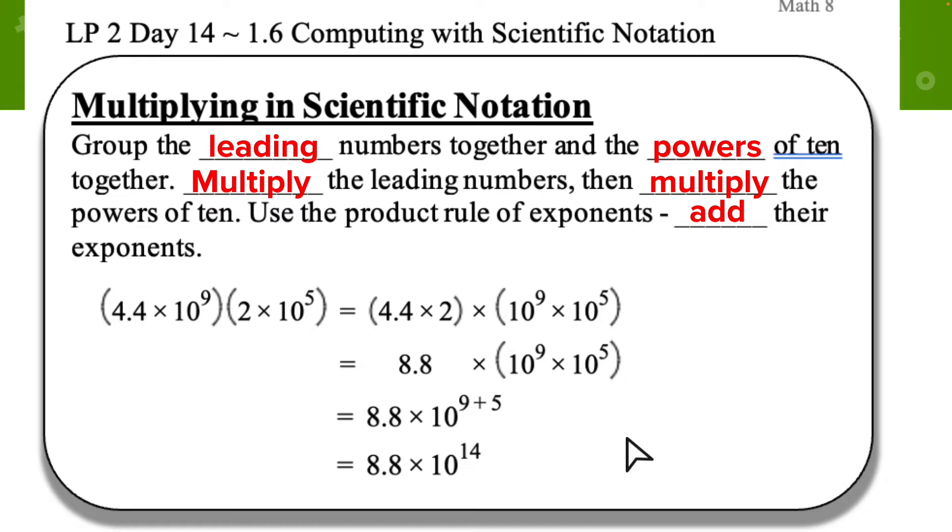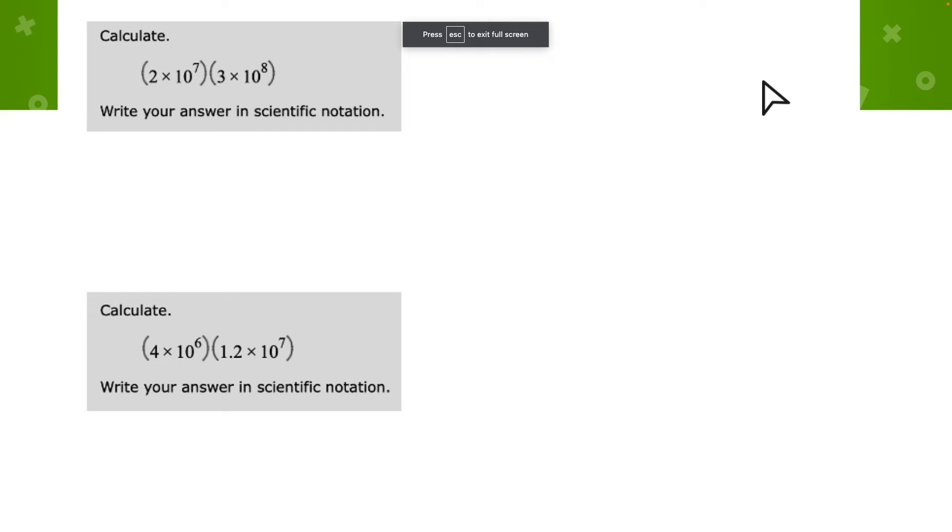Alright, let's go ahead and practice a couple. We have 2 times 10 to the 7th power and 3 times 10 to the 8th power. So we want to group the coefficients. That's the first thing we want to do is separate the two pieces. So we have our coefficients 2 and 3. And then we have our powers of 10. So I have a power of 10 to the 7th and then 10 to the 8th. So I've grouped them kind of more visually by color instead of using the parentheses. But same idea, we're just grouping them together.